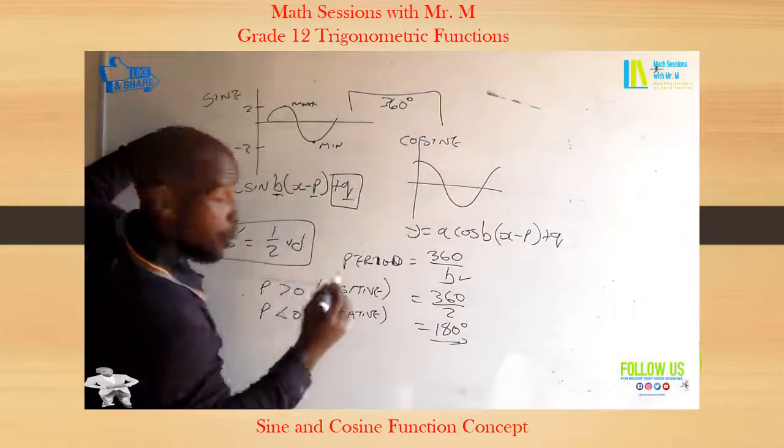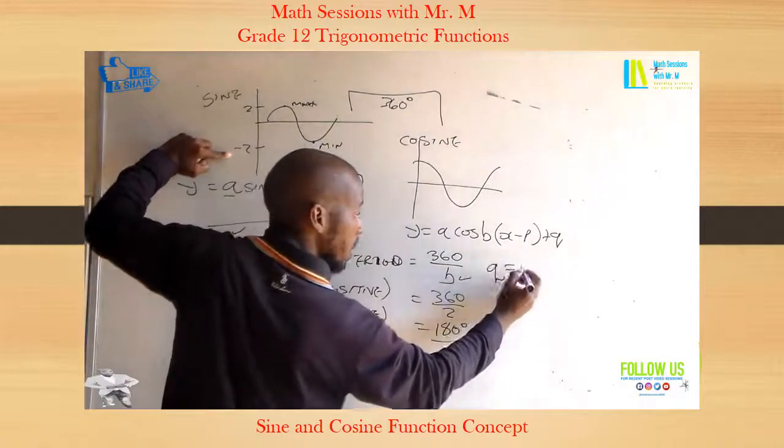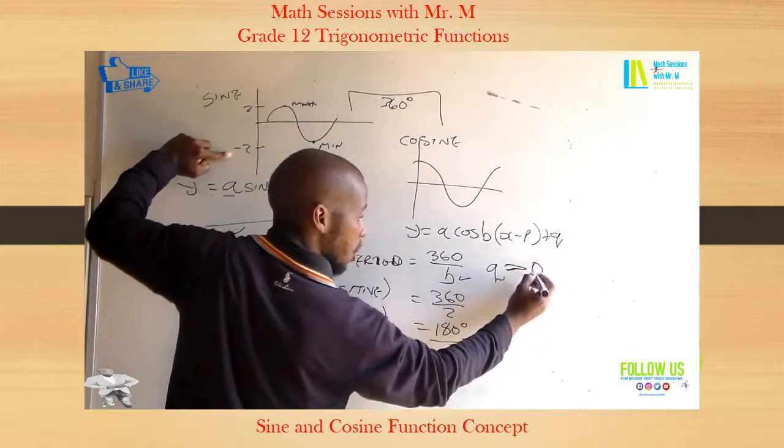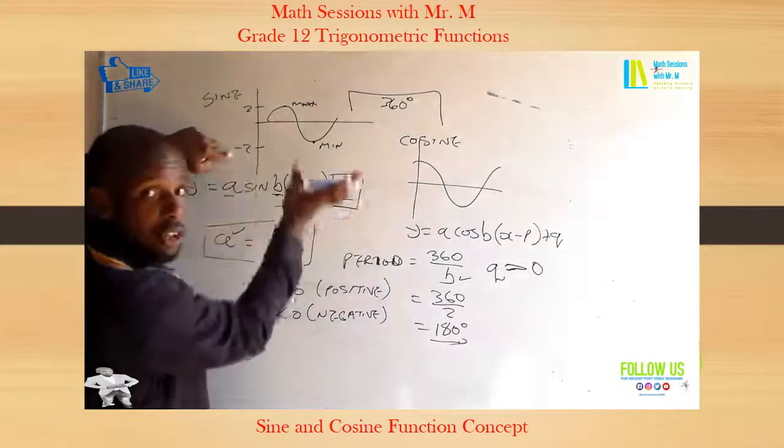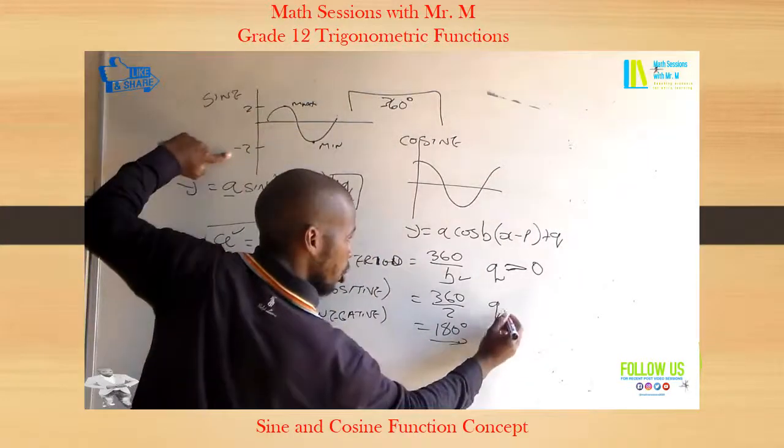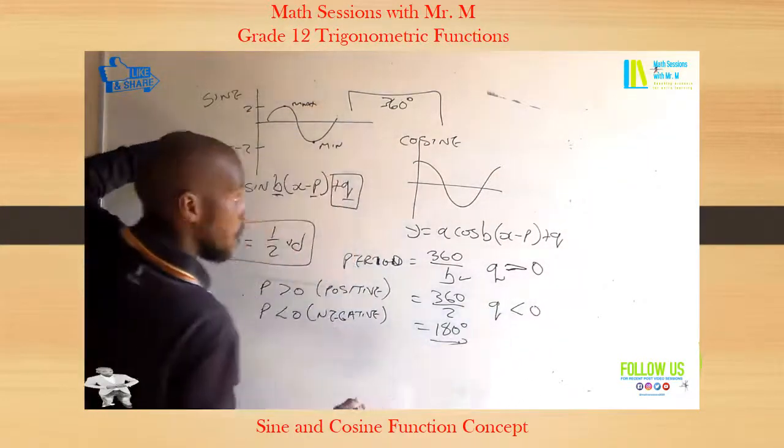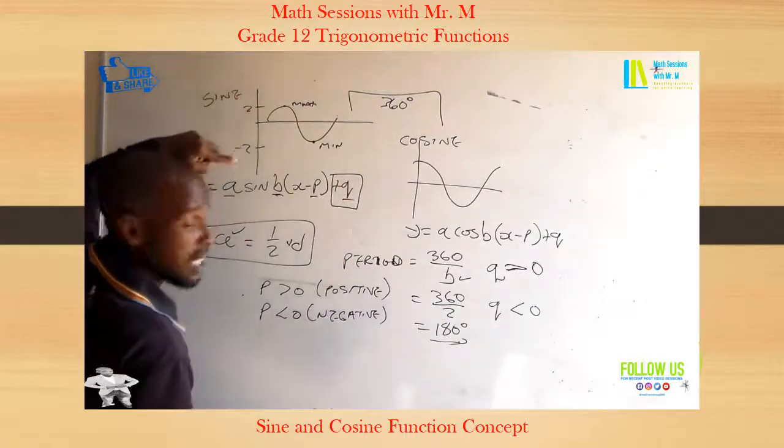So when your Q is greater than 0, your graph is shifted up. If your Q is less than 0, your graph is shifted down.